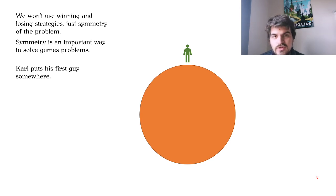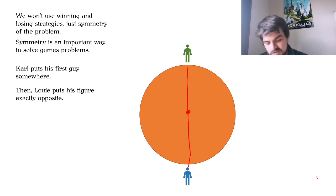Now the strategy for Louis is to always put his guy opposite Carl's guy. This goes through the center of the table and it's exactly the opposite position. At the beginning it's obvious that both boys can do this thing. There's no one sitting around this place and no one sitting here so they can always do it.